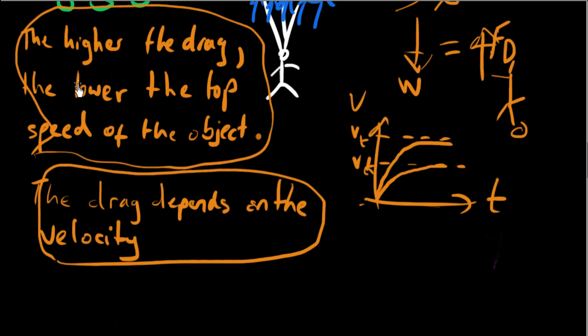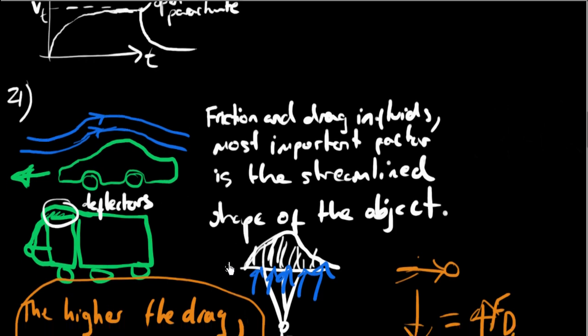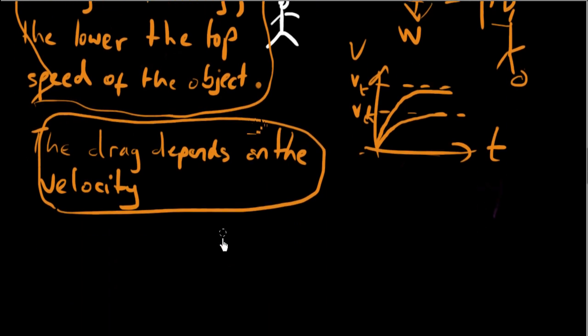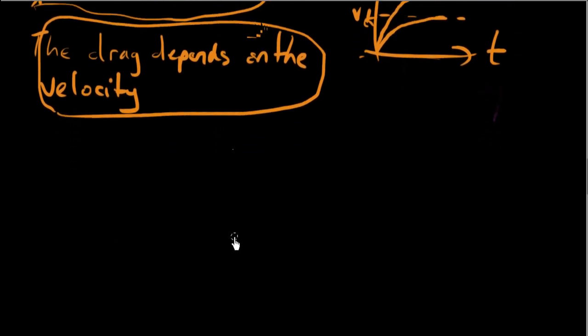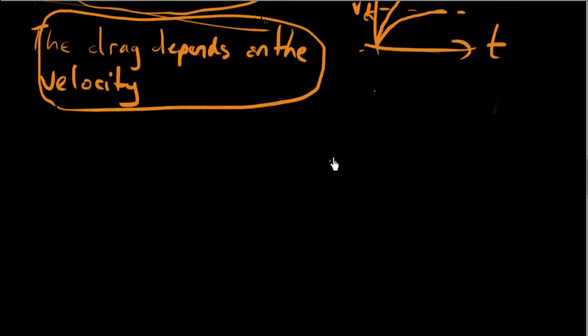So all of that's important. Hopefully that helps. The higher the drag, the lower the top speed of the object. The drag depends on the velocity. And the shape of the object is very important, the streamline shape. So the two factors affecting the drag really are the velocity and the shape of the object. So that makes sense. So yeah, obviously if you want to make an object go really quick and you want the top speed to be very large, like a Formula One car or something like that, you need to make it very, very streamlined. Okay, so let's go to the next question.